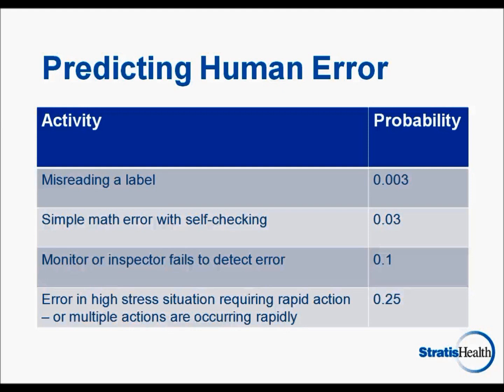The third activity is especially interesting as often we look to a second check as a way to prevent errors. However, this is not effective, as we know that one out of ten errors will not be detected by a second check. This is why double checks are not considered to be a strong corrective action and are likely a waste of staff time and energy with little benefit.